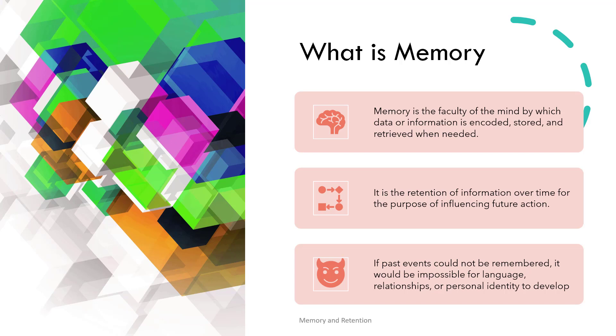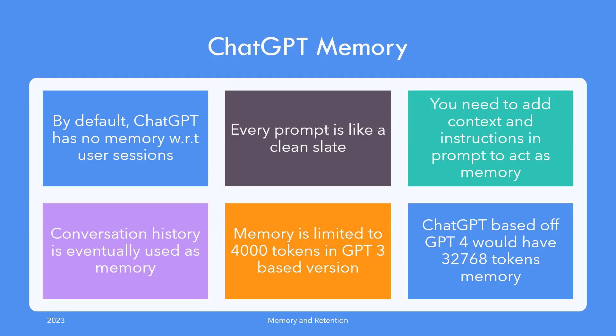When we refer to memory going forward, we mean the memory ChatGPT specifically has about you, the user. By default, ChatGPT has no memory, but as discussed in the last video about context and instructions, it slowly begins to use conversation history as memory to add more depth to the responses it generates.